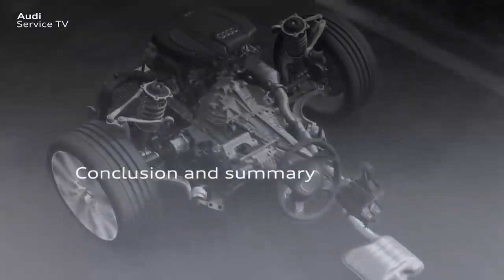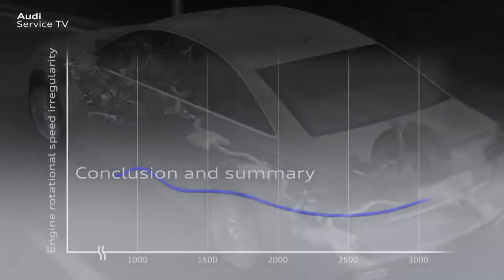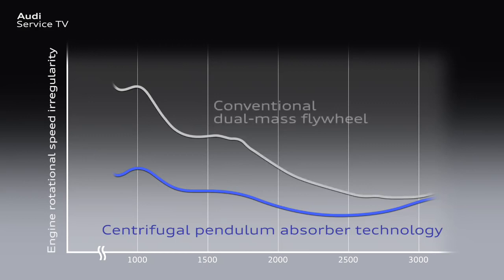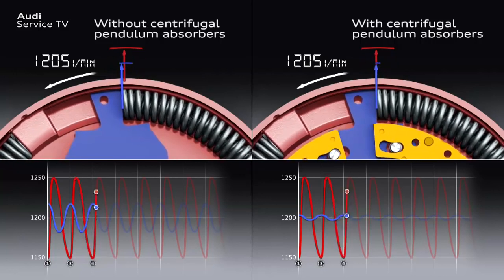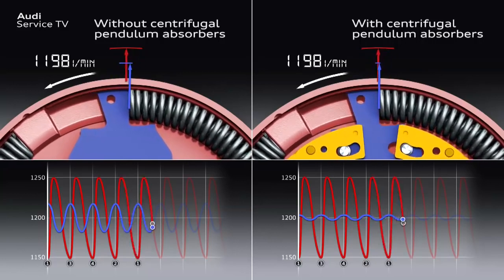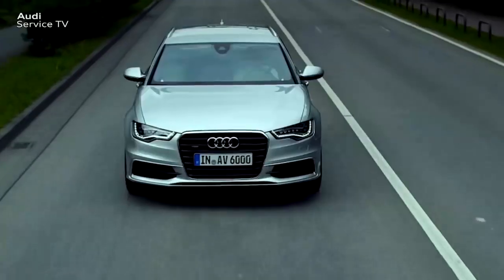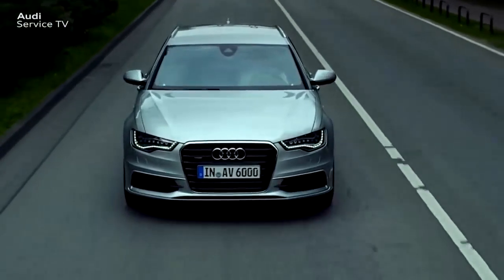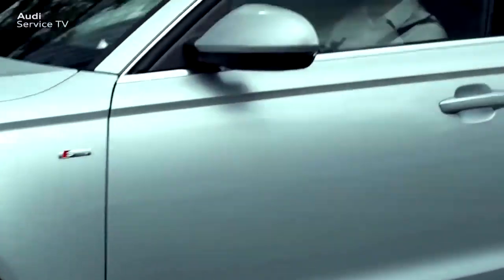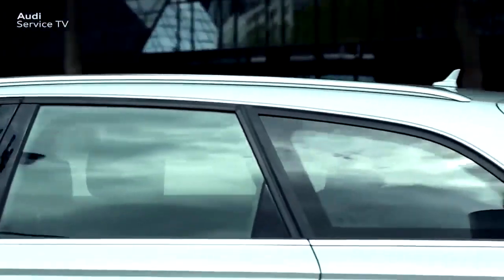In summary, with centrifugal pendulum absorber technology, engine rotational speed irregularities are eliminated more effectively than was possible with conventional dual mass flywheels. The dots mark the engine speed above which comfortable driving is possible. Centrifugal pendulum absorber technology is particularly effective on low-consumption, high-torque engines with a low number of cylinders, as these naturally run less smoothly. This technology enables low engine speed and economic driving with high acoustic driving comfort, and fuel consumption and CO2 emissions can be reduced as a result.